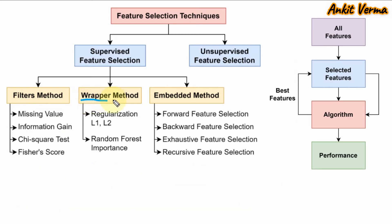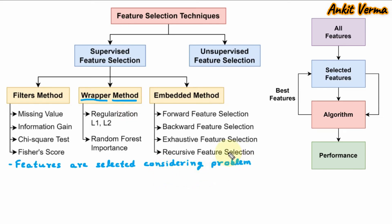Next is the wrapper method, also under supervised feature selection. Here we have all features, out of that we select the important features and provide them to the algorithm. We then take feedback from the algorithm, and based on that we update the features — we can add features and delete features — and again check the algorithm, and afterward the algorithm gives performance. In the wrapper method, features are selected considering the problem: if the algorithm says we have to update the feature, we update it — we add and remove features accordingly.